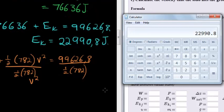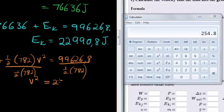And what do I get? 99626.8 divided by 2 times 782 equals 254.8.